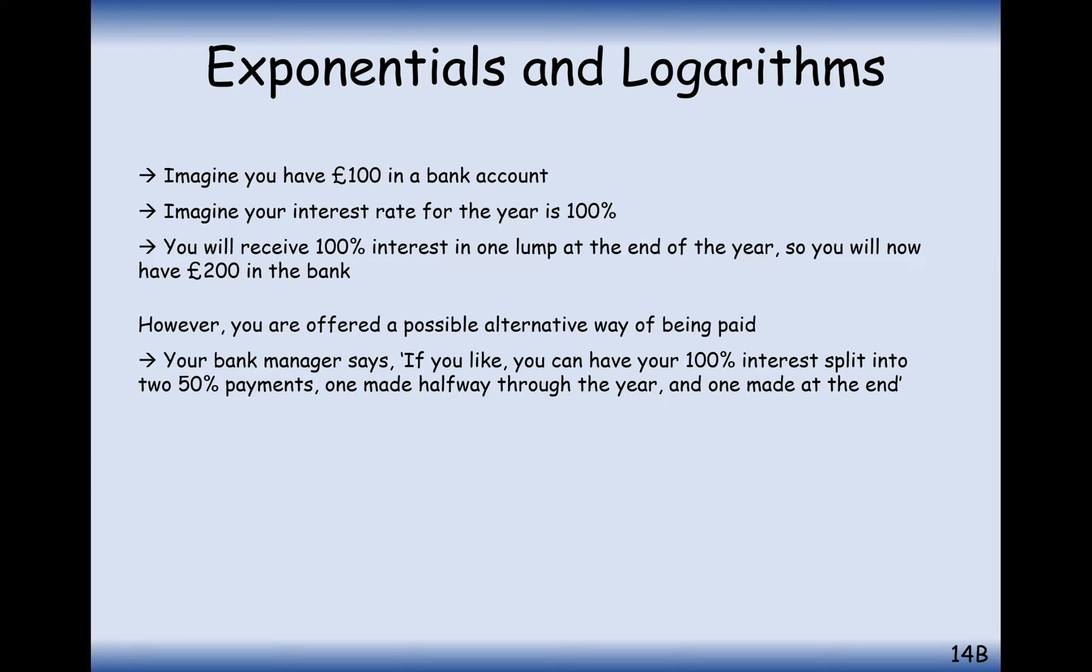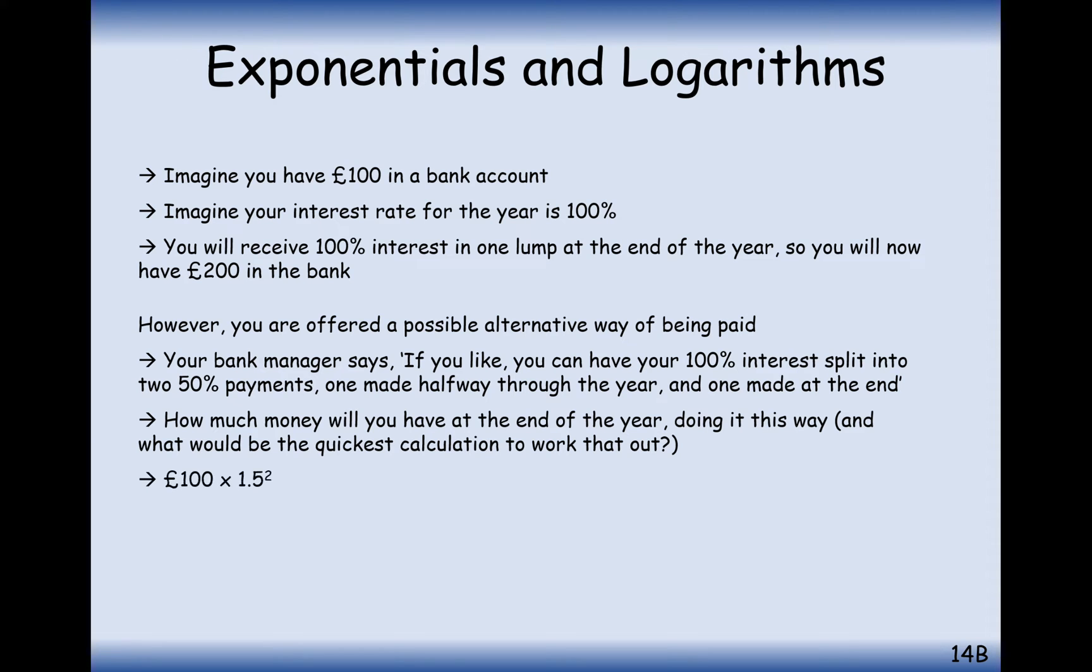But what if the bank manager comes to you and says, instead of actually giving you 100% interest just in one year, how about we split it up into two 50% payments, one made halfway through the year and one made at the end of the year? And you'd think, increase it by 50% and then 50% again, you'd have compound interest there. So you'd get £225. You'd think, well, great idea, Mr. Bank Manager.